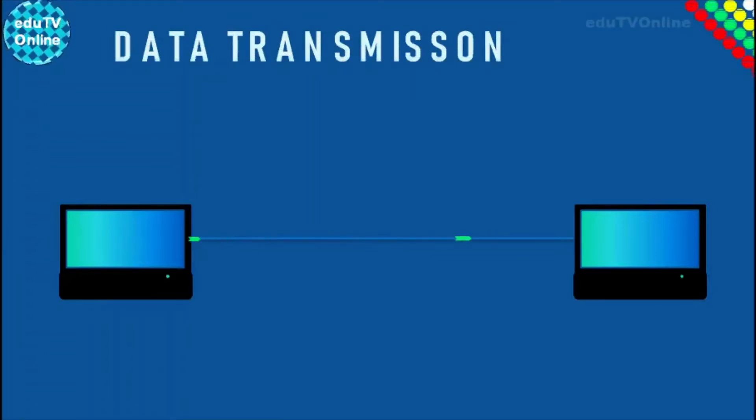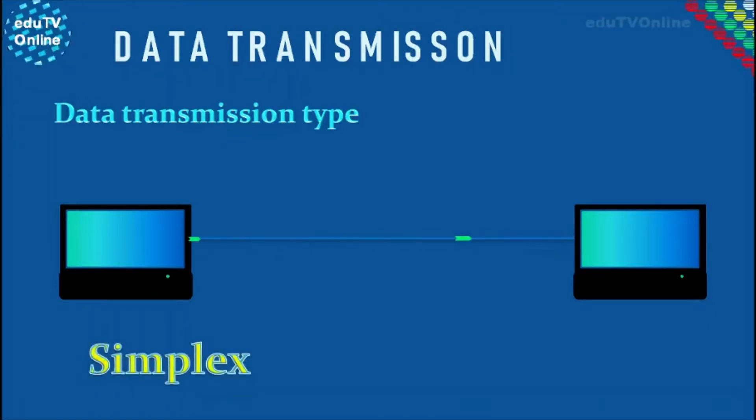Hello everyone, welcome to another video. In this video we are going to talk about different transmission types that are used in networking, and those types are simplex, half duplex, and full duplex. So let's talk about them one by one.